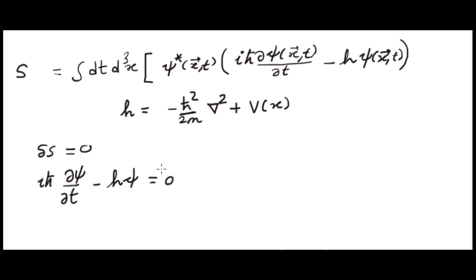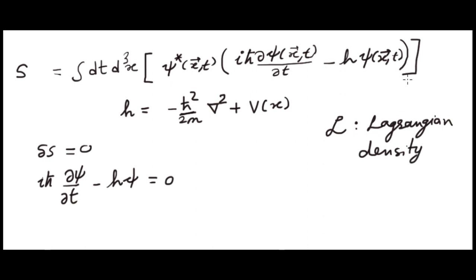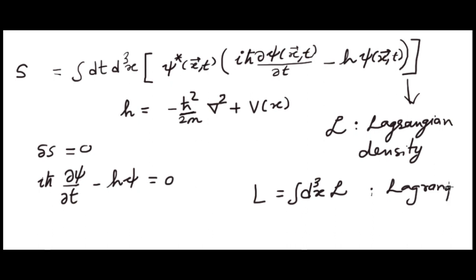The quantity within square brackets is called the Lagrangian density, denoted by curly-L. If you integrate the Lagrangian density over all of space, you get the Lagrangian. And when you integrate the Lagrangian over time, you get the action.